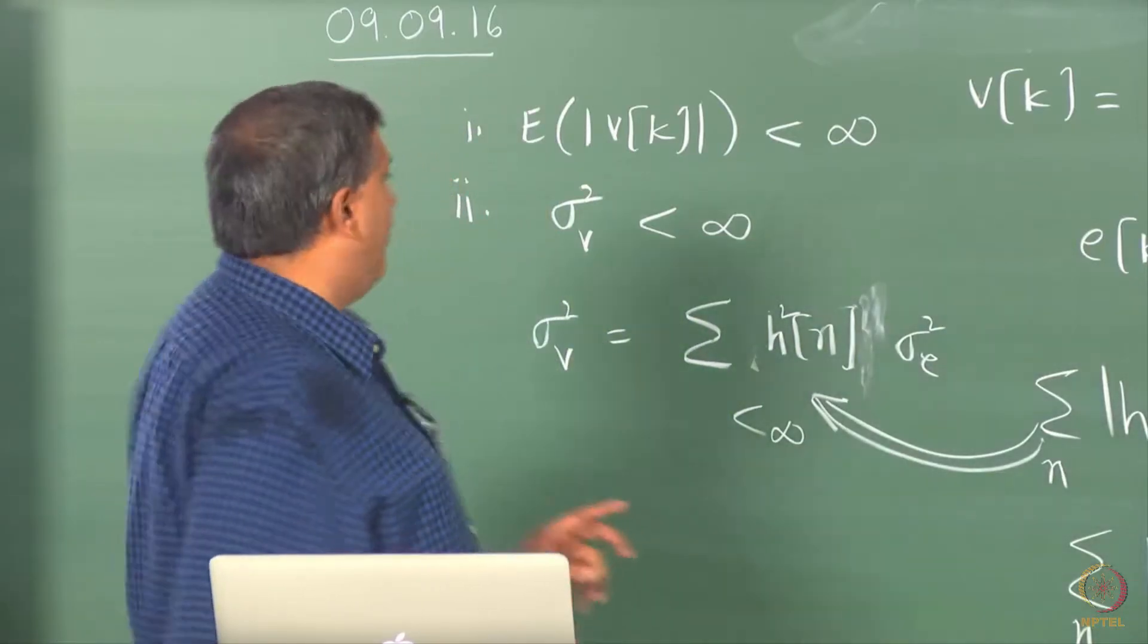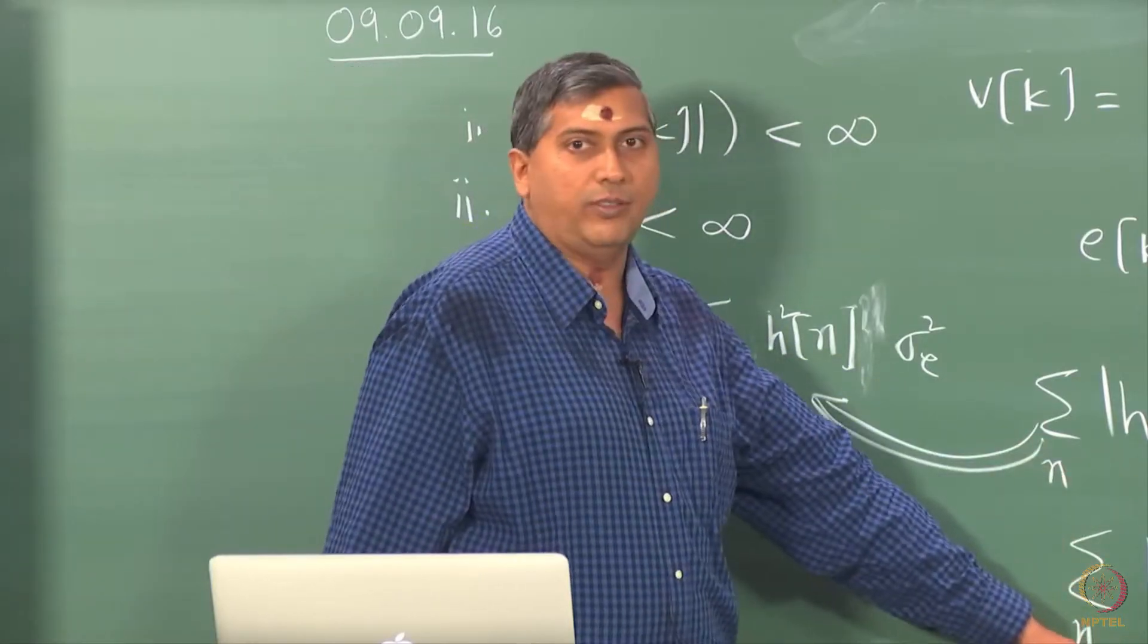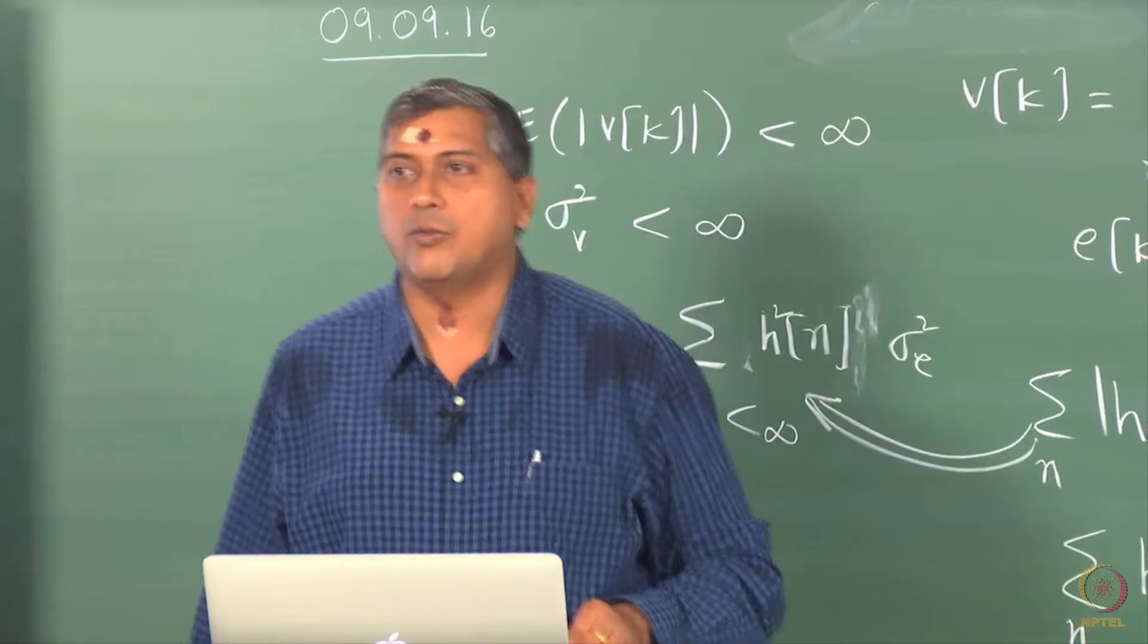So you understand now that the variance is obviously going to be finite whether this holds or this holds. Now, what is the third requirement for stationarity?